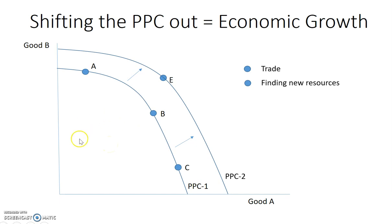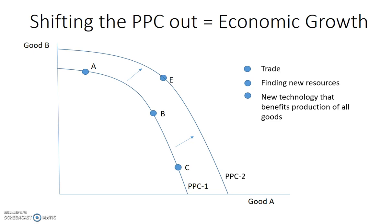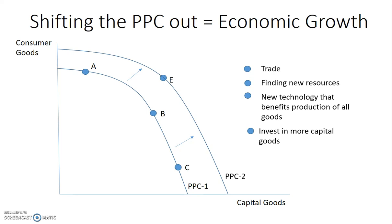You could also have more people migrate into the country, giving you more laborers to allow more work to be done. Another way to achieve economic growth is if new technology is invented or created — but it has to be technology that benefits all types of production, not just particular goods. New technology that affects everything broadly is what matters. The third way to shift out the PPC requires relabeling good B as consumer goods and good A as capital goods, and then investing in more capital goods.